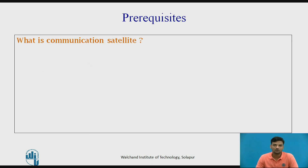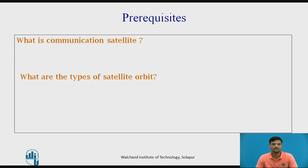Before starting the attitude and orbit control subsystem, recall what is a communication satellite. A communication satellite is an artificial satellite that relays and amplifies radio telecommunications signals via a transponder, creating a communication channel between a source transmitter and a receiver at different locations on earth. Communication satellites are used for television, telephone, radio, internet and military applications. There are over 2000 communication satellites in earth's orbit used by both private and government organizations.